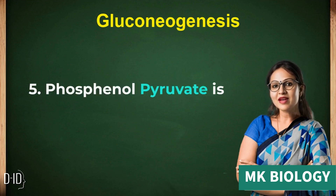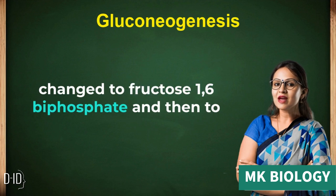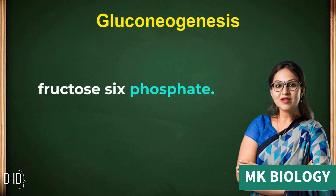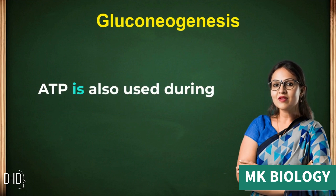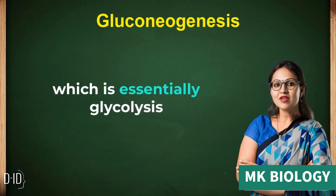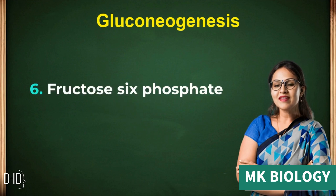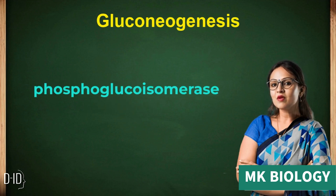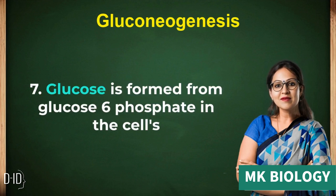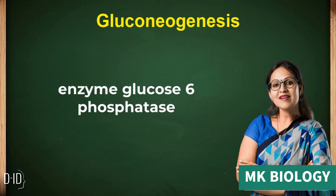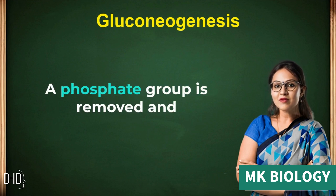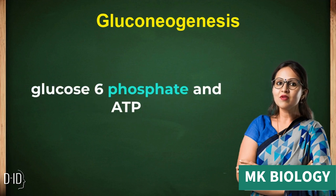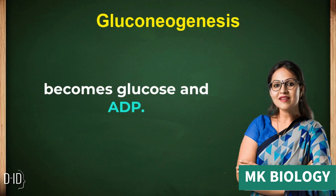Oxaloacetate forms phosphoenolpyruvate using the enzyme PEPCK. Phosphoenolpyruvate is changed to fructose 1,6-bisphosphate and then to fructose 6-phosphate. ATP is also used during this process, which is essentially glycolysis in reverse. Fructose 6-phosphate becomes glucose 6-phosphate with the enzyme phosphoglucoisomerase. Glucose is then formed from glucose 6-phosphate in the cell's endoplasmic reticulum via the enzyme glucose 6-phosphatase, where a phosphate group is removed and ATP becomes ADP.